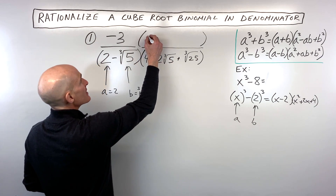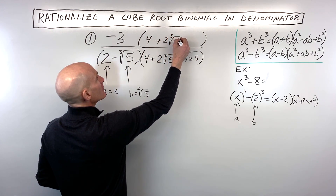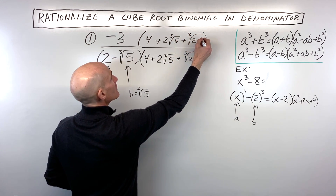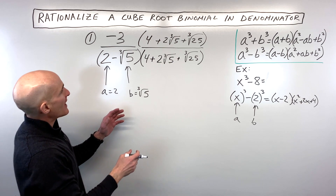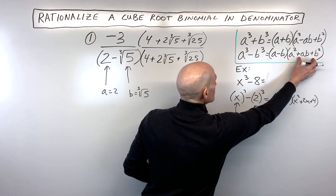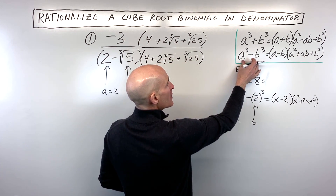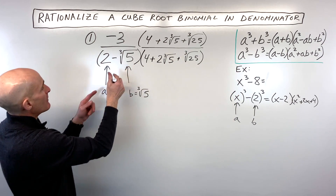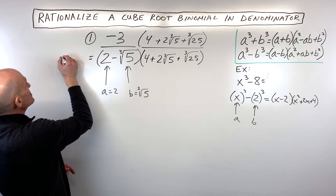One times anything is itself, so let's put that same trinomial in the numerator. Now we recognize that this binomial times this trinomial gives us a cubed minus b cubed. So a cubed is 2 cubed, which is 8.